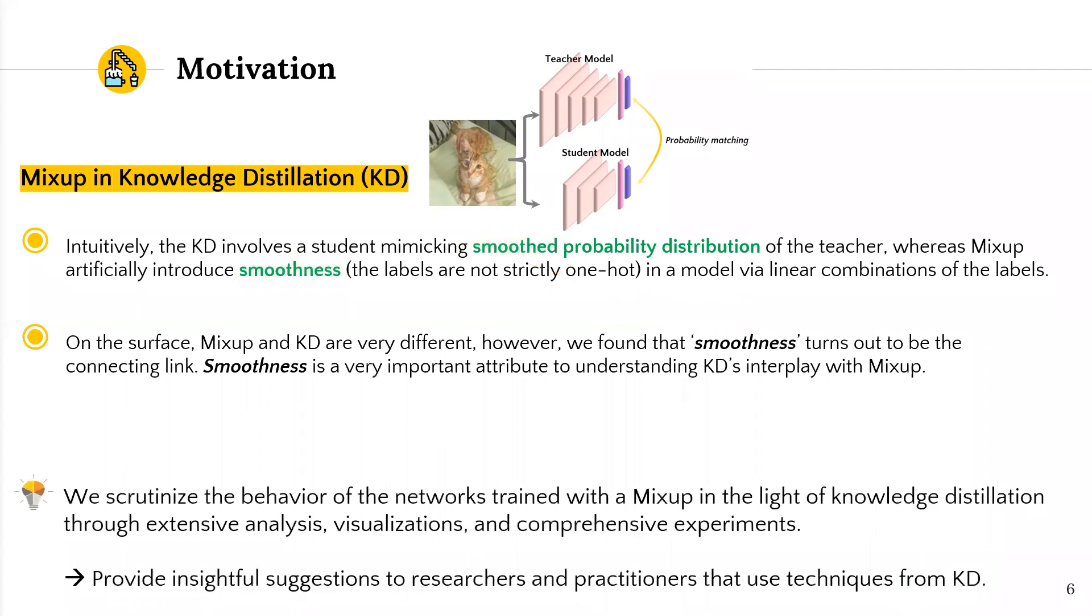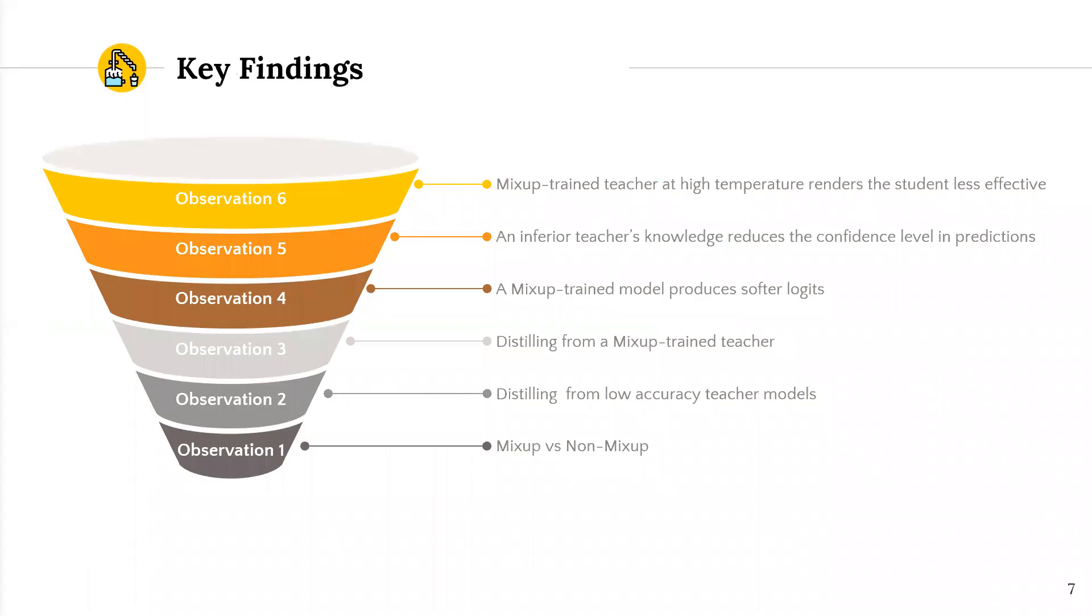In this study, we inspect the behavior of the network trained with mix-up in the presence of knowledge distillation through extensive analysis, visualization, and comprehensive experiments. Starting from this motivation, we try to make intriguing observations, and you might want to see them in the main paper.